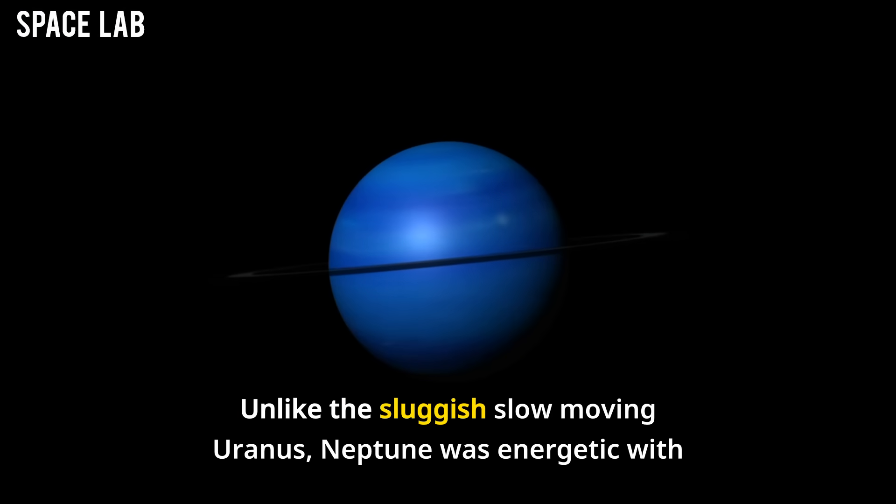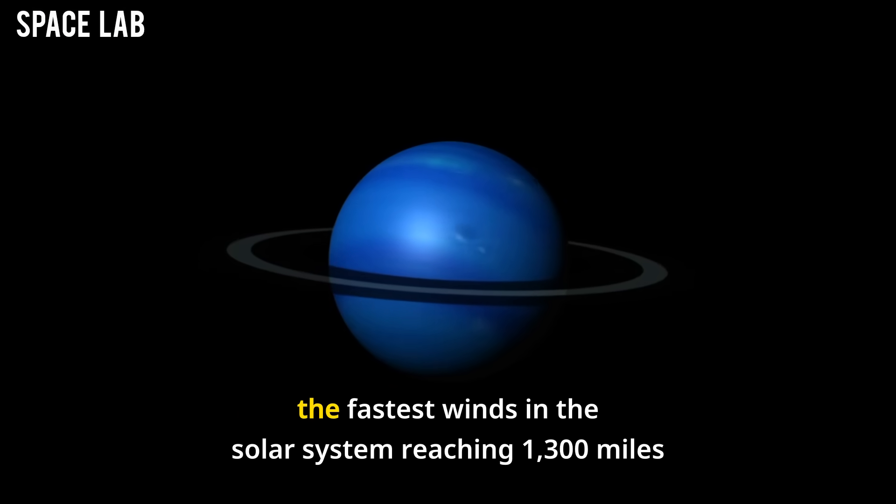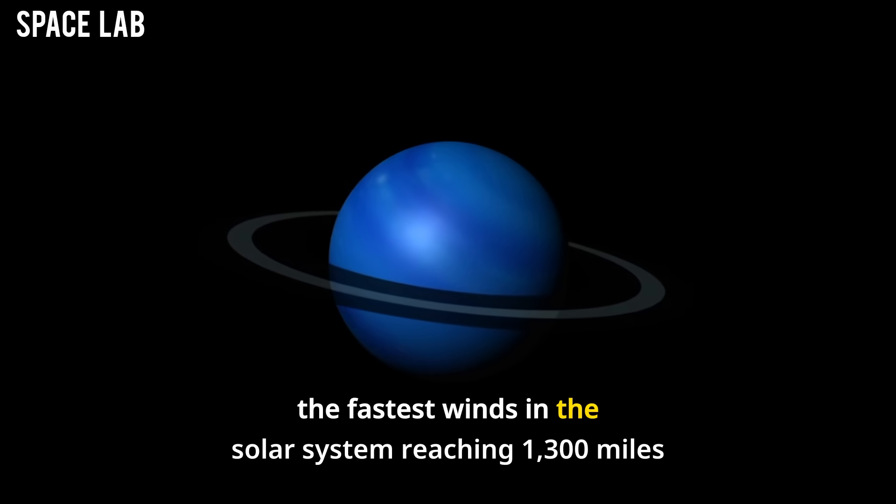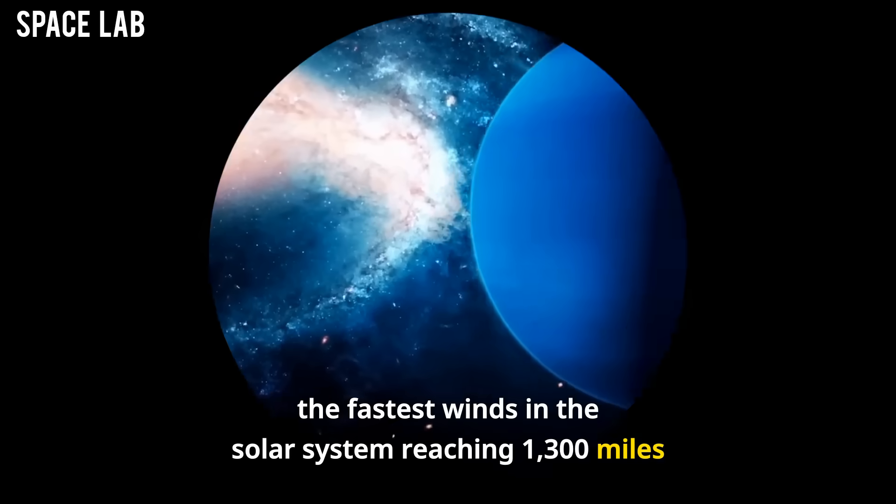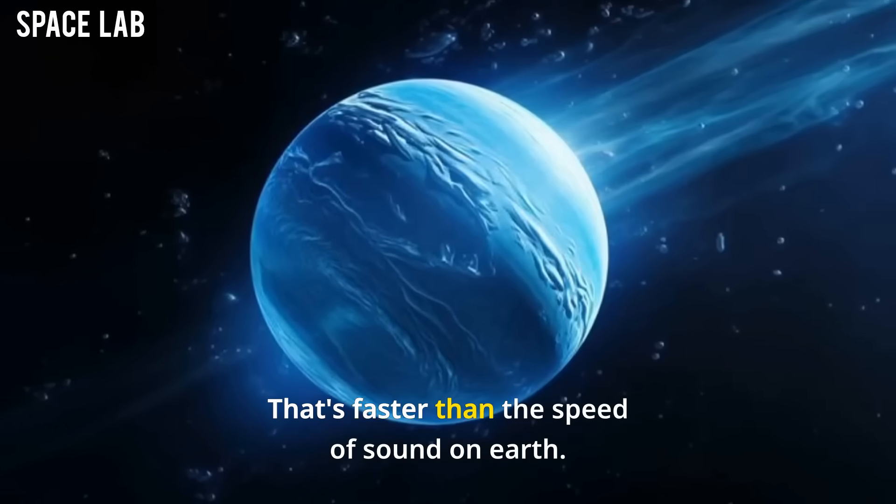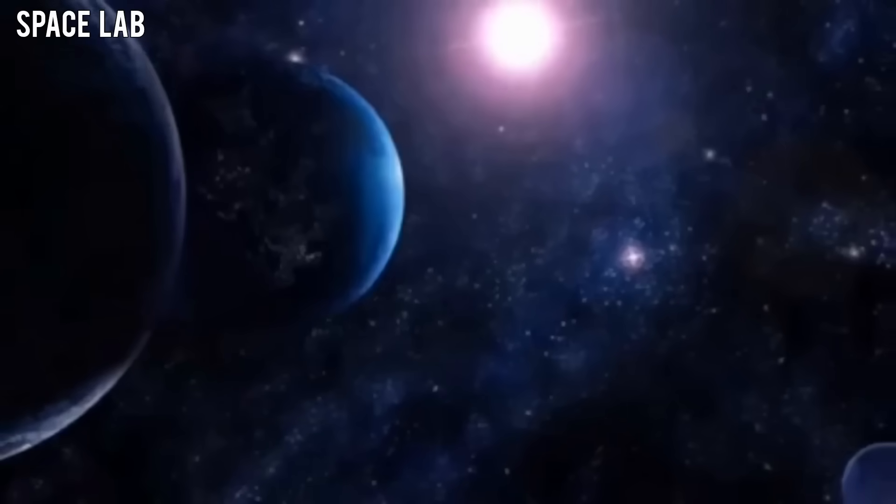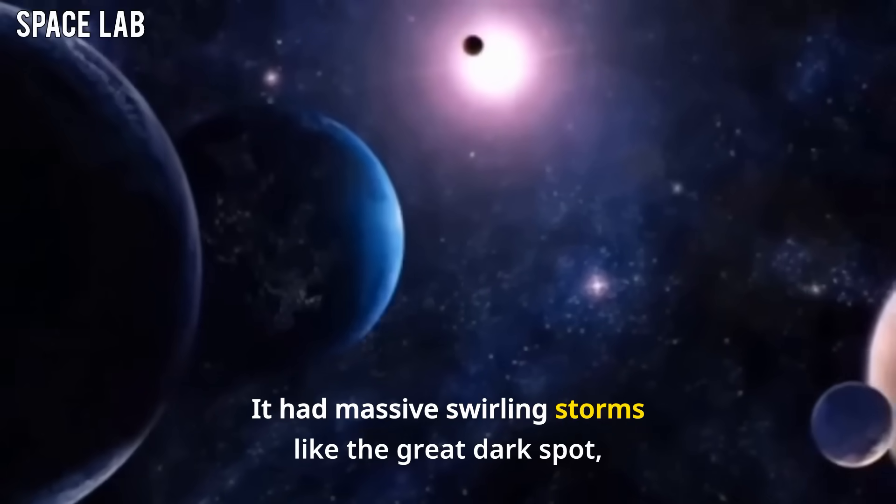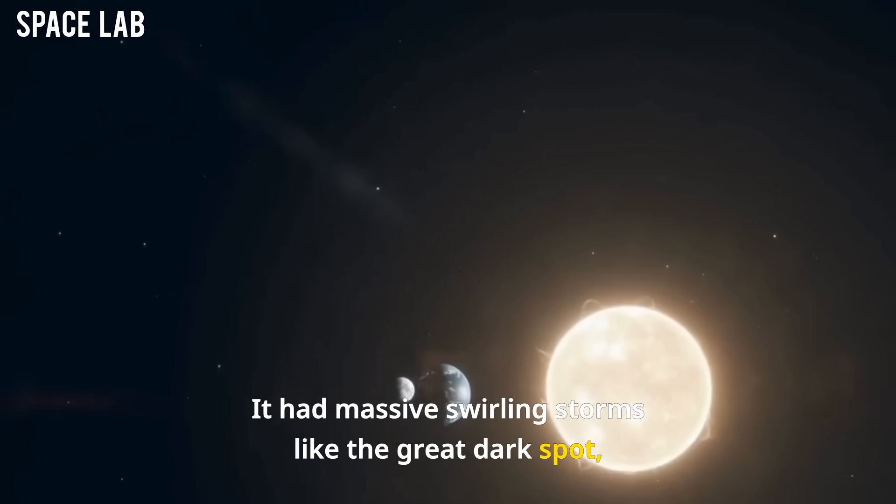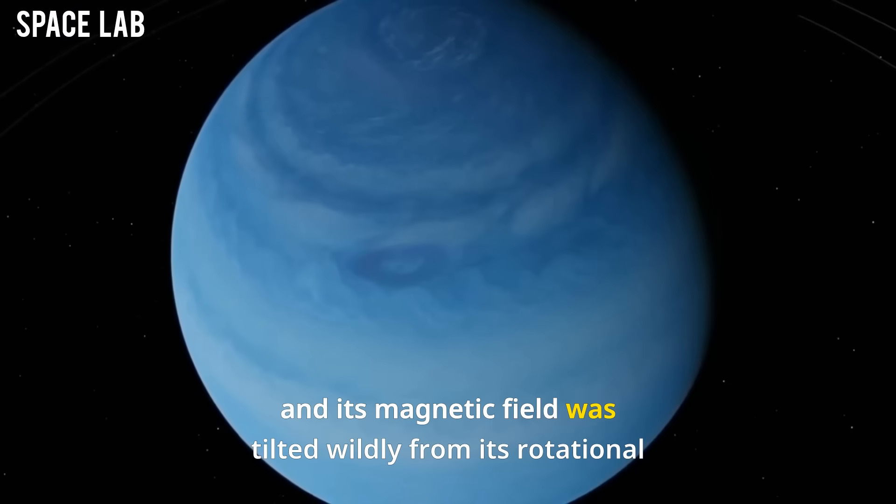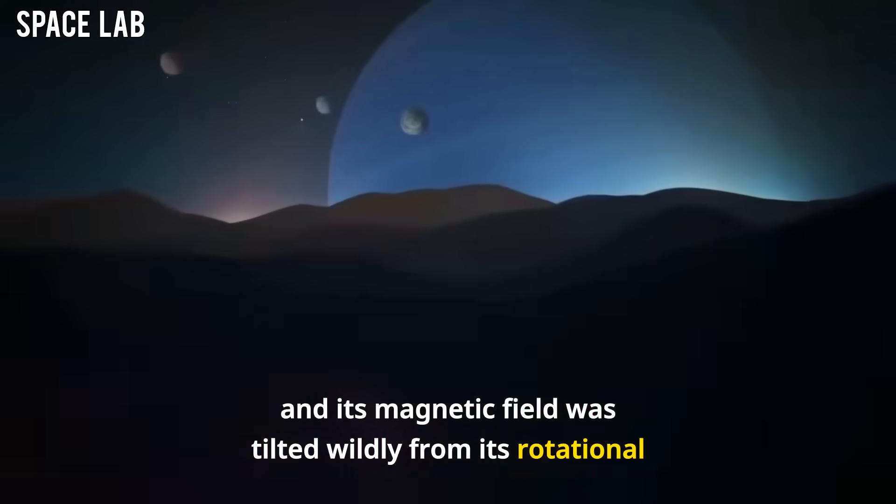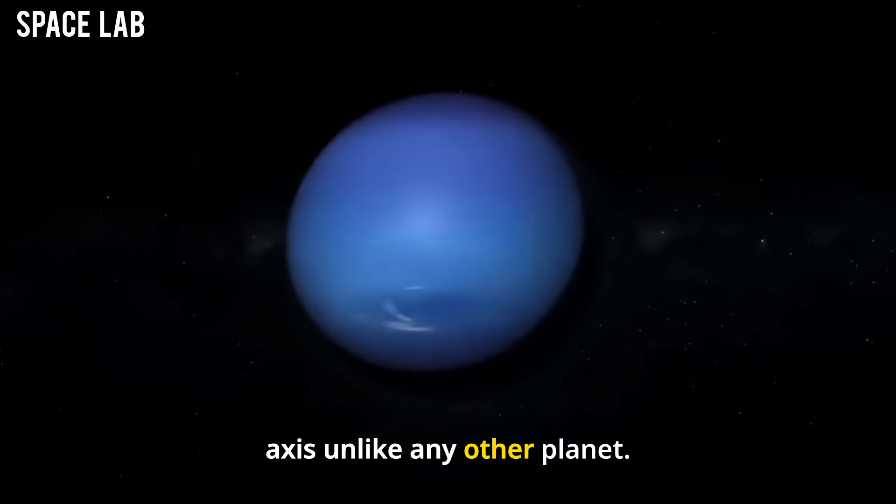Unlike the sluggish, slow-moving Uranus, Neptune was energetic, with the fastest winds in the solar system reaching 1,300 miles per hour. That's faster than the speed of sound on Earth. It had massive swirling storms like the Great Dark Spot, and its magnetic field was tilted wildly from its rotational axis, unlike any other planet.